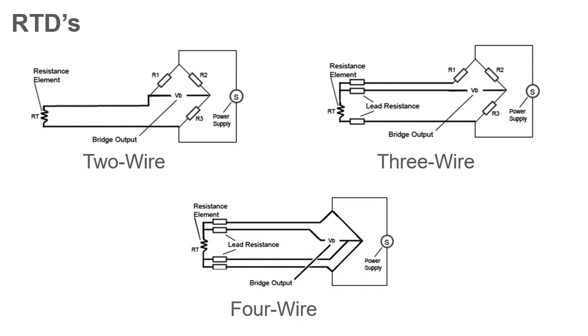Since RTDs are active sensors, they require external excitation to produce a measurable voltage drop that can be translated into resistance. Resistance values are generally very low, meaning lead wire resistance can cause less accurate measurements. Because of this, RTDs often come in multi-wire configurations.